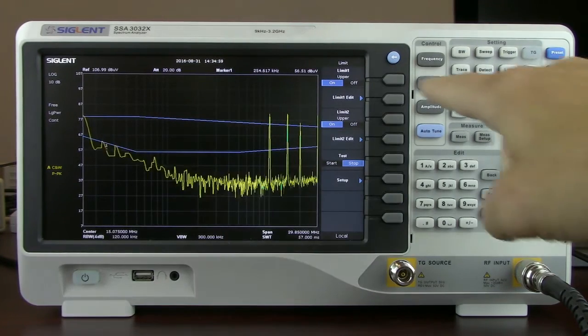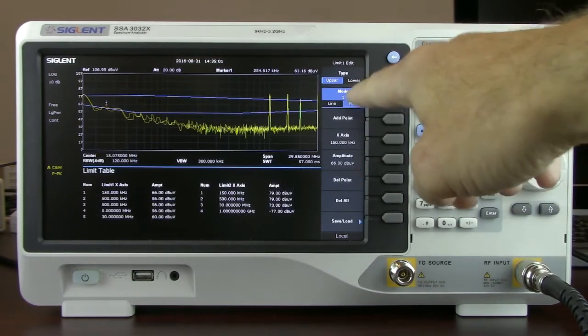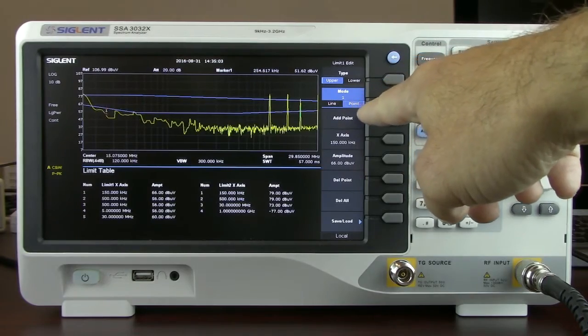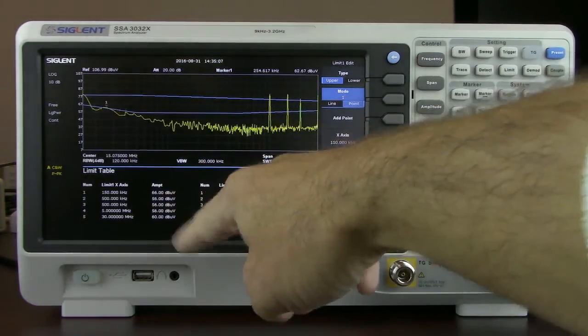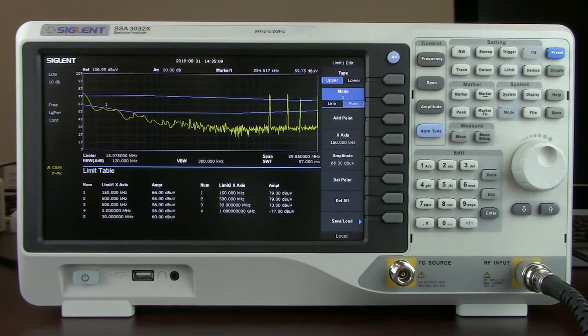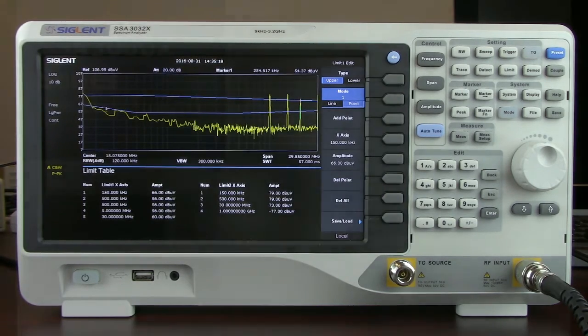Both of the limits can also be edited. They've got a line mode as well as a point mode. In the point mode you can see we've got the X axis as well as the amplitude values for each of the points in that particular test. All of these features are very helpful when performing pre-compliance. And there's also a software application that can help to sequence a lot of the data collection.